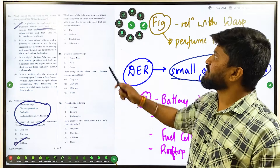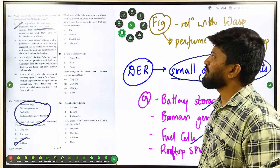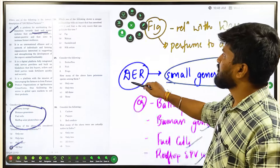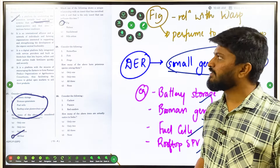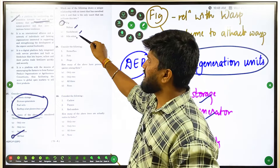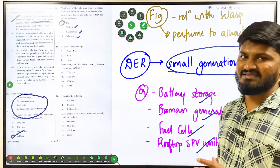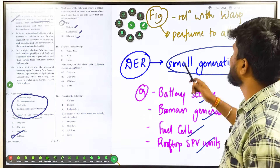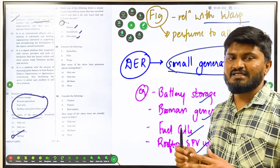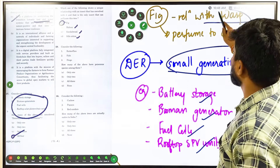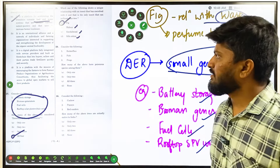Question 28 asks which tree has a unique relation with an insect that co-evolved with it and is the only insect that can pollinate it. The answer is the fig tree. Fig is the only fruit-producing tree among the options — mahogany, sandalwood, and silk cotton are not commonly consumed fruits. Fig produces a certain perfume that attracts wasps, and wasps are the only ones capable of pollinating figs. The correct answer is option A — fig.